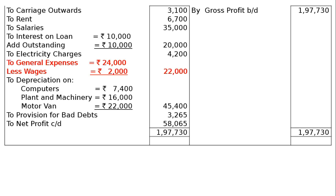In the totalling column on the debit side, we will have net profit carried down Rs. 58,065. Now our balance sheet.